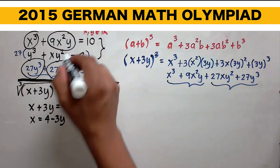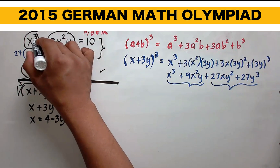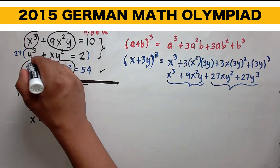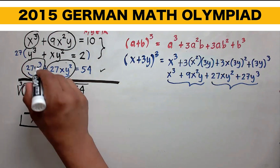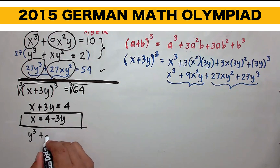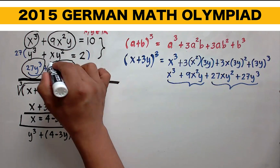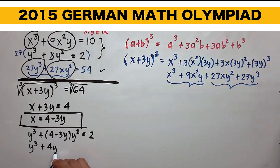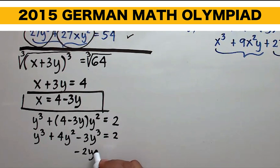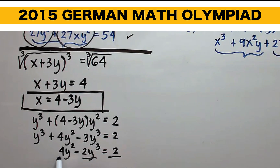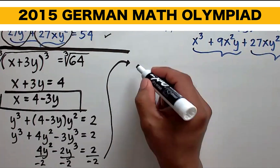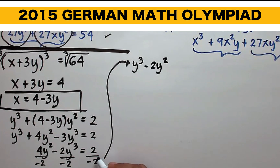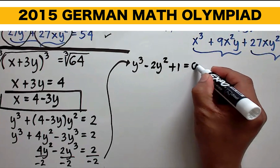We can substitute this into the first or the second equation. We'll avoid the first equation because it's raised to the third, so let's take the original second equation. Substituting x equals 4 minus 3y, we have y cubed plus (4 minus 3y) times y squared equals 2. Simplifying, we get y cubed plus 4y squared minus 3y cubed equals 2. y cubed minus 3y cubed is negative 2y cubed, so negative 2y cubed plus 4y squared equals 2. Dividing by negative 2, we get y cubed minus 2y squared plus 1 equals 0.